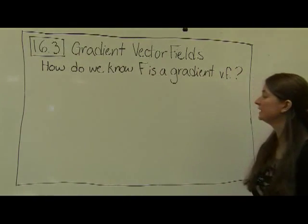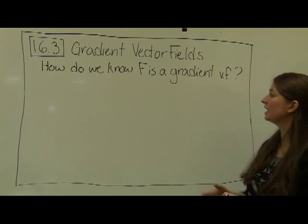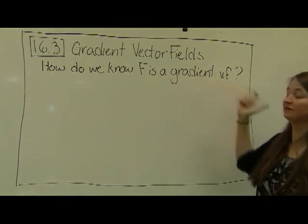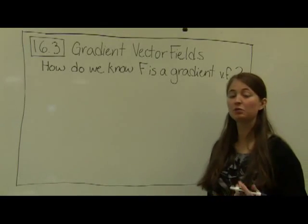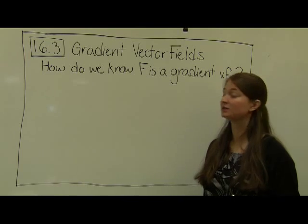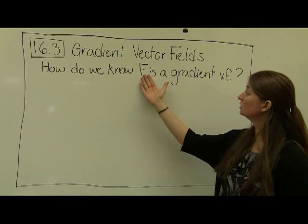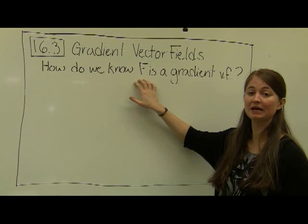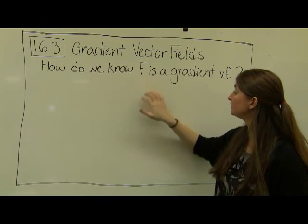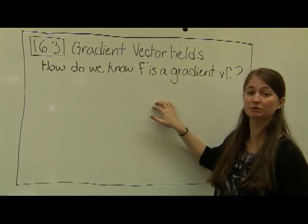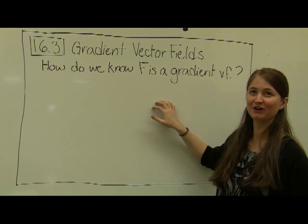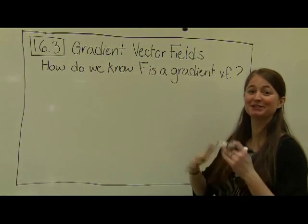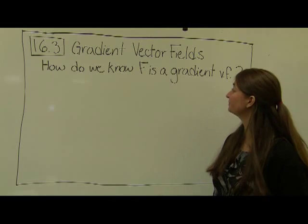Our final topic for today is how to find out whether f is a gradient vector field. We've already talked about one way of doing this — working backwards: starting with our f, we can take integrals of each of the components with respect to their respective variables to work backwards and develop a potential function.